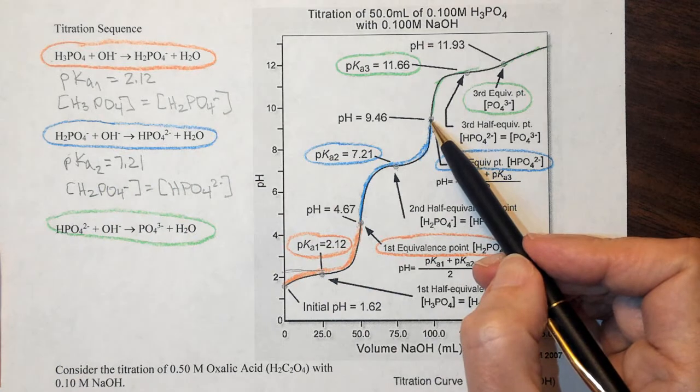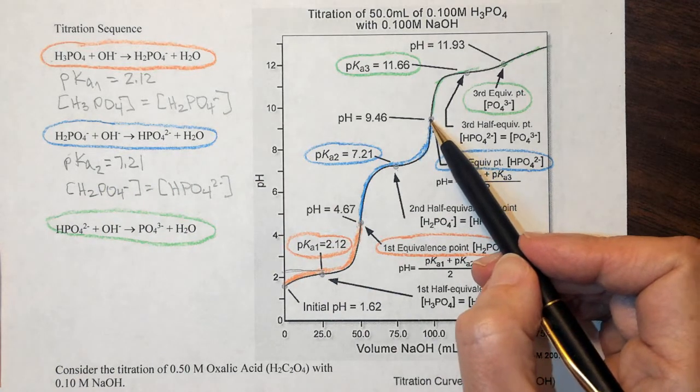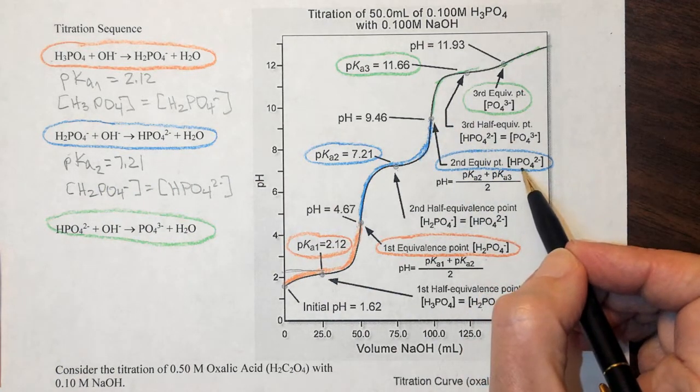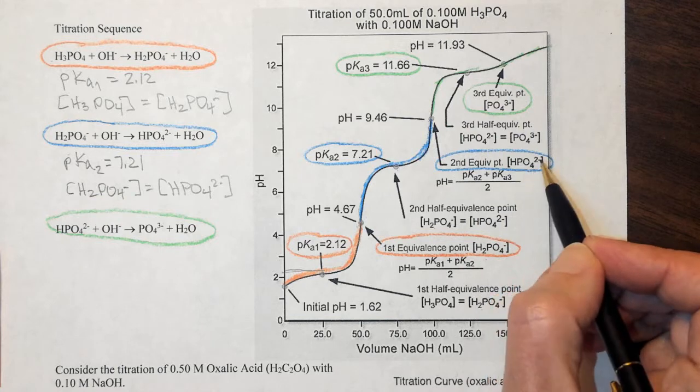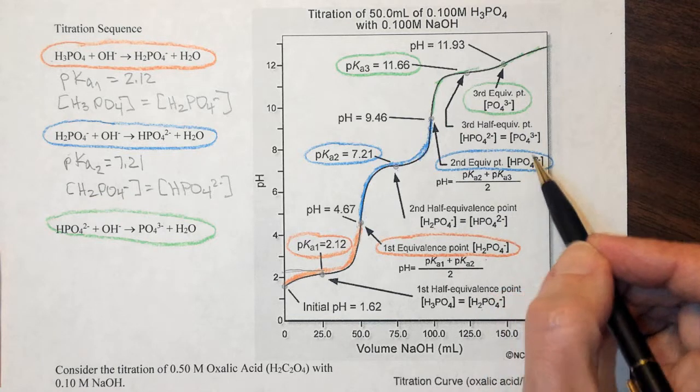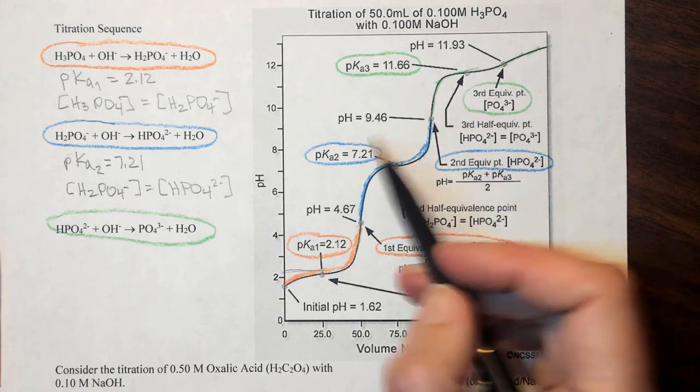So we have finished up our second equivalence point. We have just HPO4 2 minus left primarily. Now we're going through the last deprotonation shown in green.